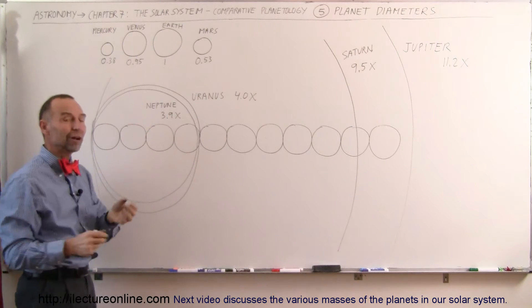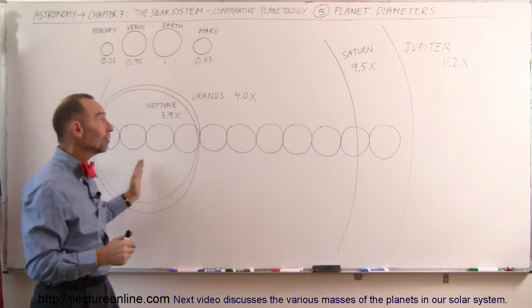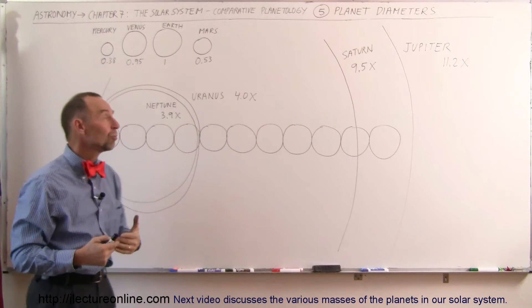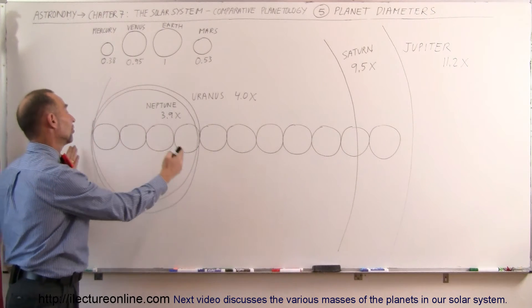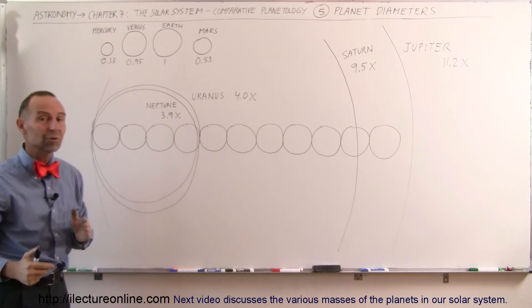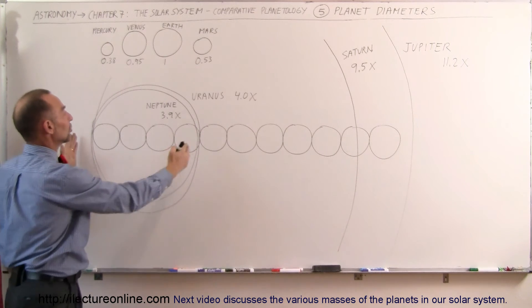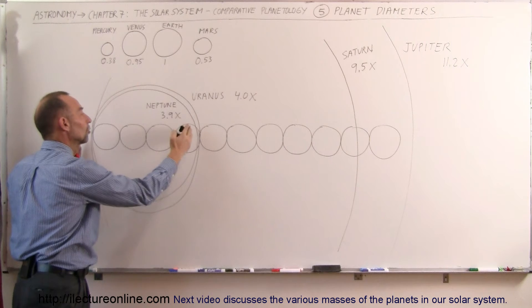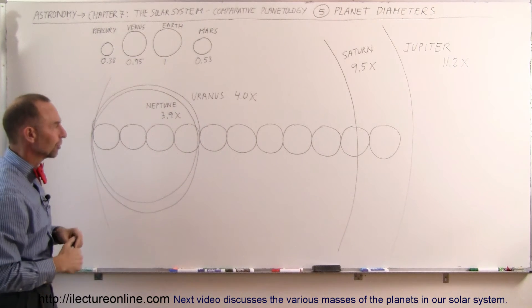They're, relatively to Saturn and Jupiter, quite a bit smaller, but relative to the Earth, still enormous. Notice that Uranus has a radius about four times, or a diameter about four times the diameter of the Earth. Neptune, just a close second to that, 3.9 times the diameter of the Earth.